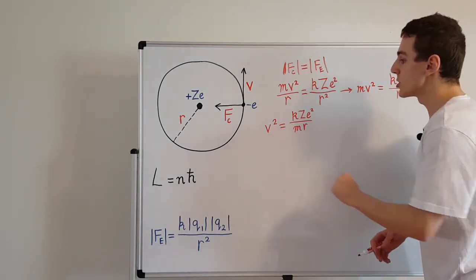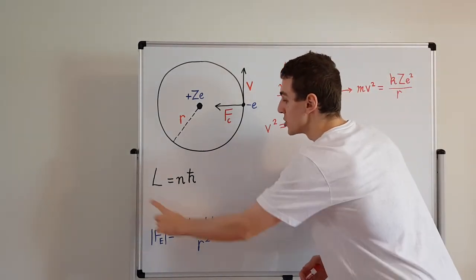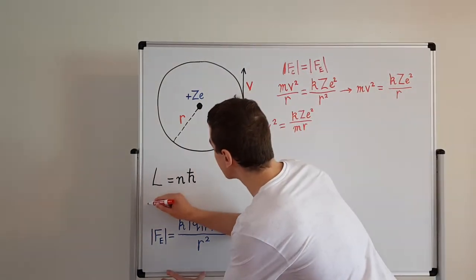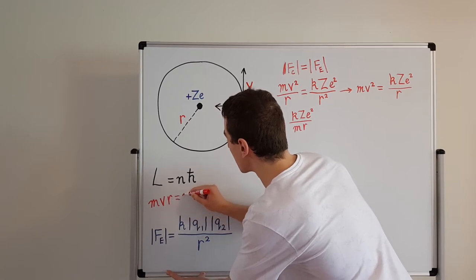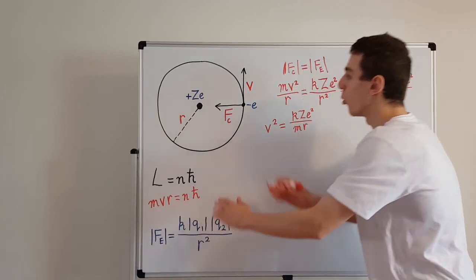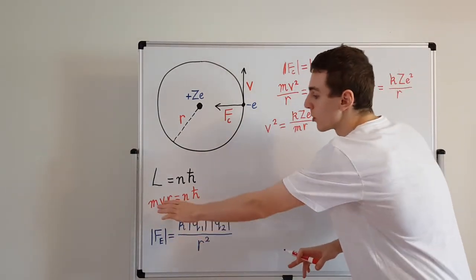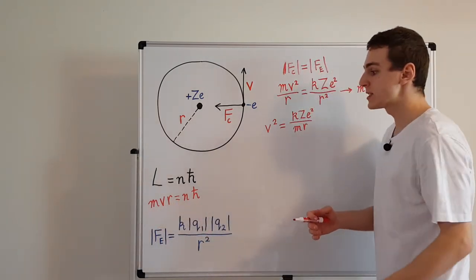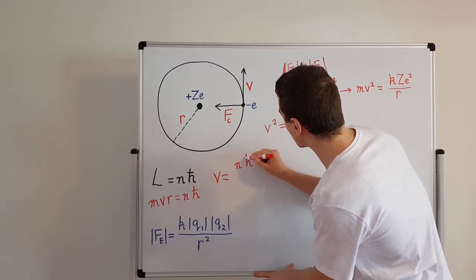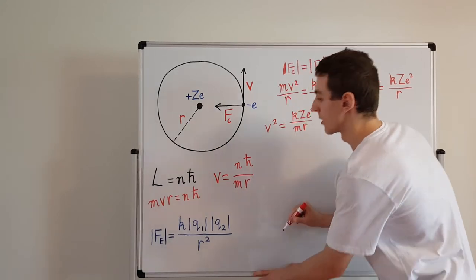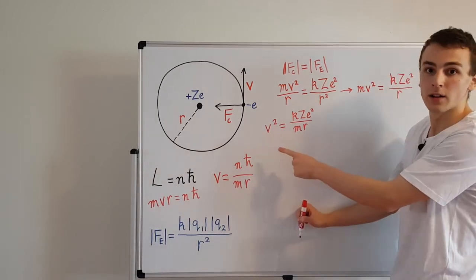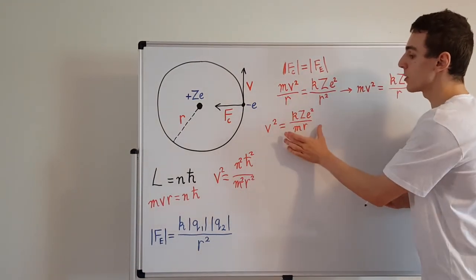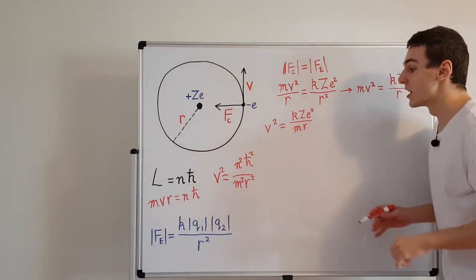From the angular momentum quantization relation, L = mvr = n·h-bar, since all vectors are perpendicular so there's no sine-theta factor. Dividing both sides by mr gives v = n·h-bar/(mr). Squaring both sides gives v² = n²h-bar²/(m²r²). Now we have two expressions for v², both containing r, so we can set them equal to solve for r.